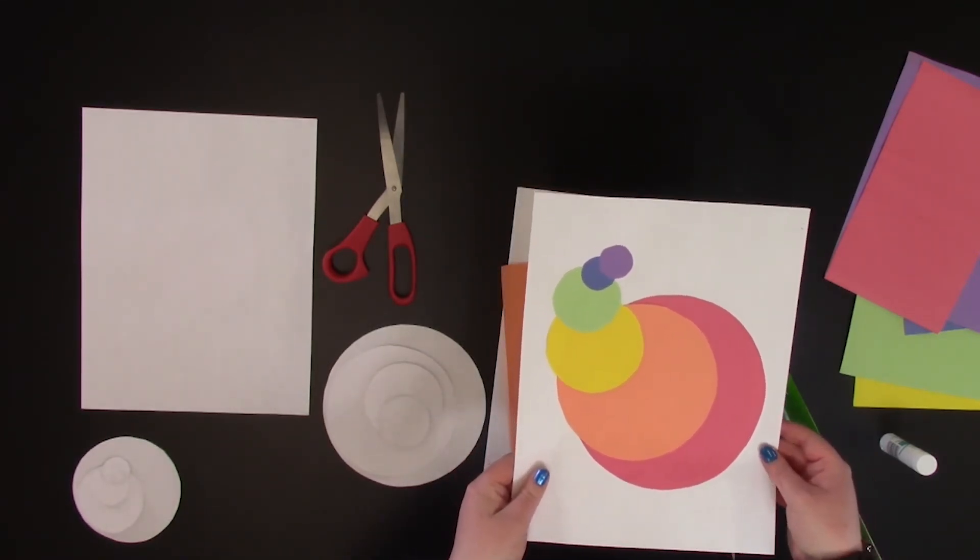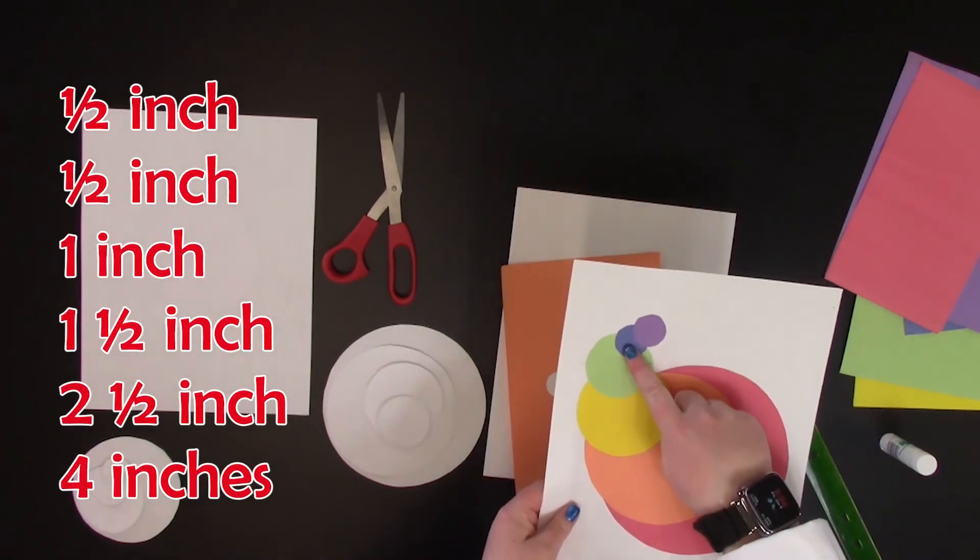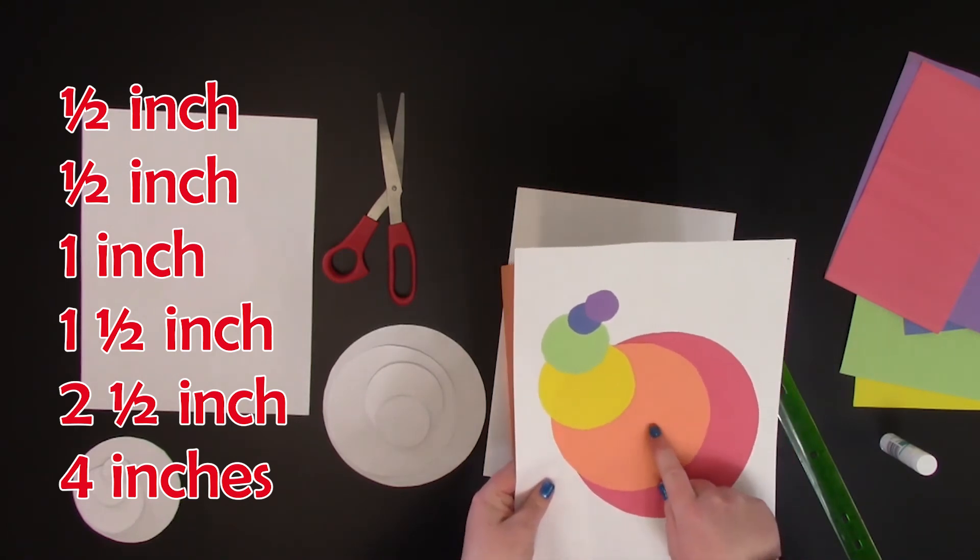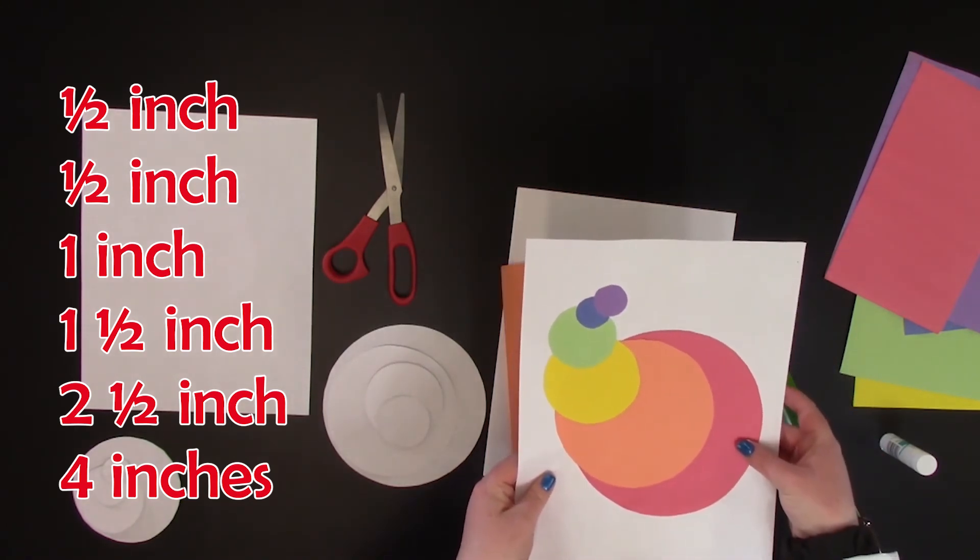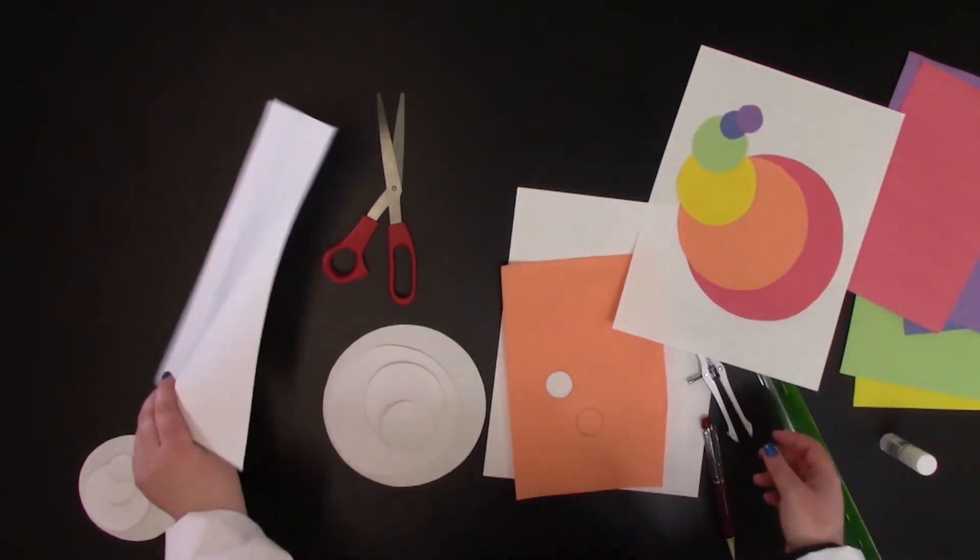So this is using a half-inch radius. We have half-inch radius, half-inch radius, one-inch radius, one and a half inch radius, two and a half inch radius, and four-inch radius. And our smaller one looks something like this.